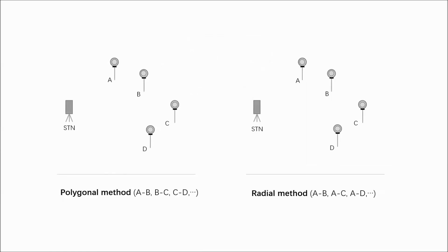The calculation can be selected between two different methods. One is polygonal method, which calculates from point A to point B, point B to point C. The other one is radial method, which calculates from point A to point B, point A to point C.